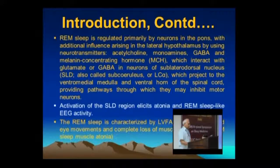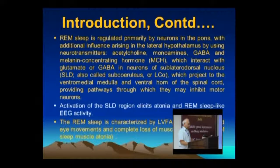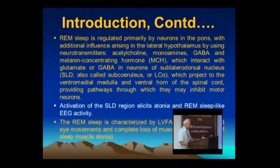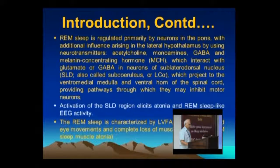REM sleep is regulated primarily by neurons in the pons, with additional influence arising from the lateral hypothalamus, using neurotransmitters: acetylcholine, monoamines, GABA, and melanin-concentrating hormone, which interact with glutamate or GABA in neurons of the sub-lateral dorsal nucleus — also known as the sub-coeruleus — situated just below the locus coeruleus. These project to the ventromedial medulla and ventral horn of the spinal cord, providing pathways to inhibit motor neurons and produce atonia or decrease muscle tone during REM sleep.